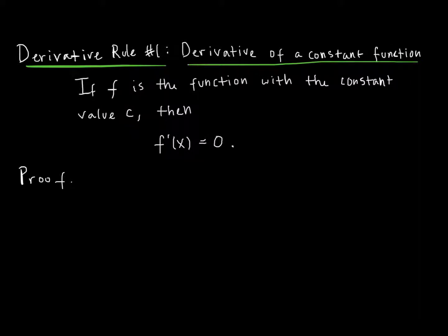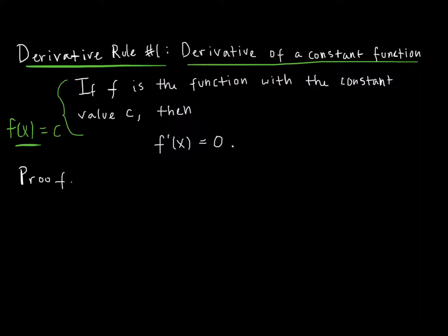This is the derivative of a constant function. If f is the function with the constant value C, then f prime of x — the derivative of f with respect to x — is equal to 0. This should make sense: think about some function, say f(x) = 5. That's just a horizontal line through 5. What's the slope of that function? It's 0 — it's a perfectly flat line, so the derivative is always equal to 0.